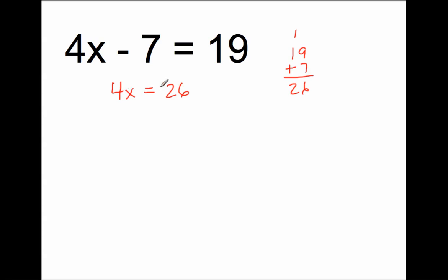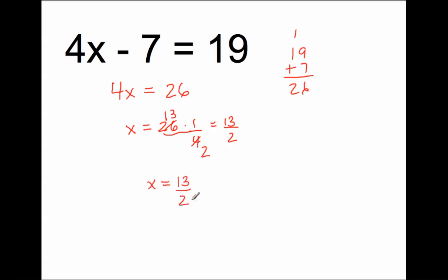So I have 4x equals 26. Instead of multiplying 26 by 4, I'm going to multiply by the reciprocal of 4, which is 1 fourth. So x equals 26 times 1 fourth. Can I cross-cancel? Yes — I pull out a factor of 2 from both 4 and 26, leaving 13 over 2. So x equals 13 halves. Let's check: 4 times 13 halves minus 7 equals 19. I cross-cancel the 4 with the 2, getting 2 times 13 equals 26. Then 26 minus 7 is 19. Yes, the answer is correct.